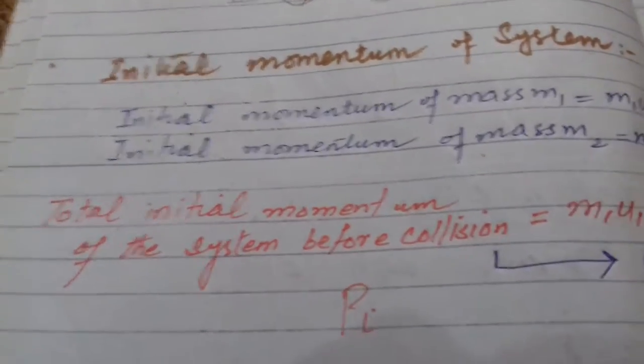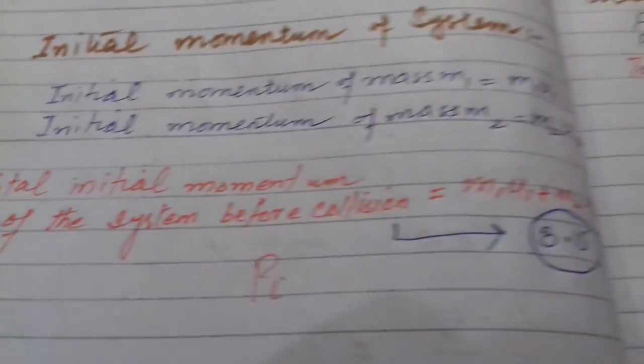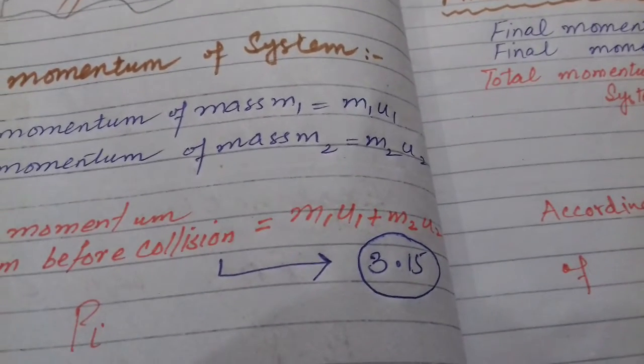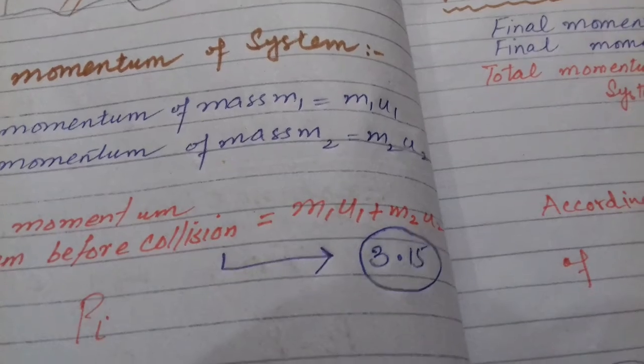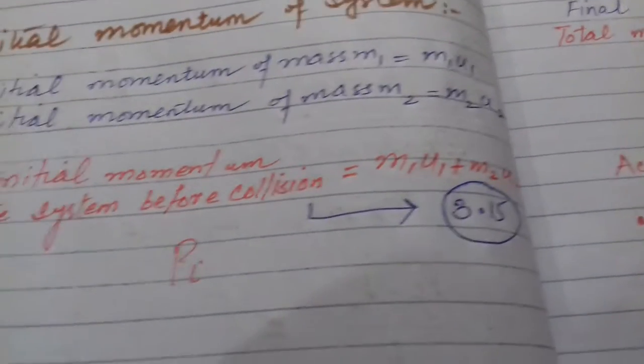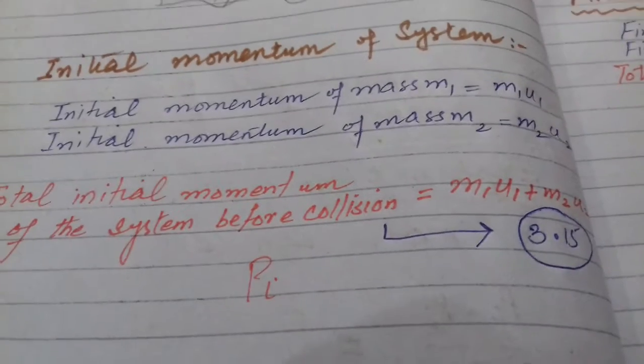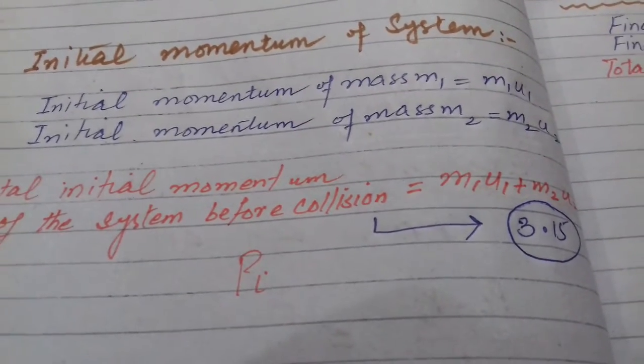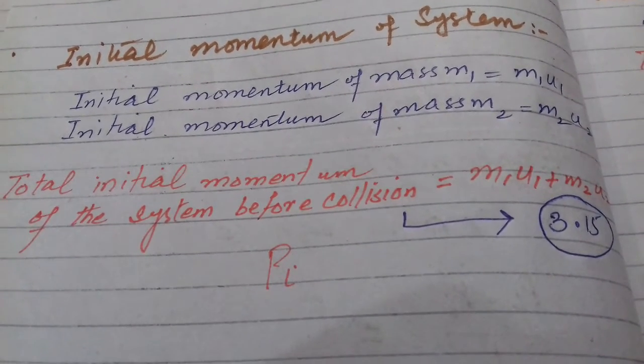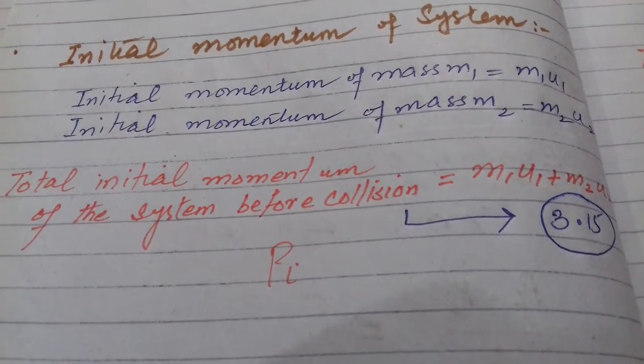Total initial momentum of the system before collision is the sum of these two: M1U1 plus M2U2. This is labeled as equation 3.15 in your book. Total initial momentum, how did we find out? Add up initial momentum of mass M1 to initial momentum of mass M2.